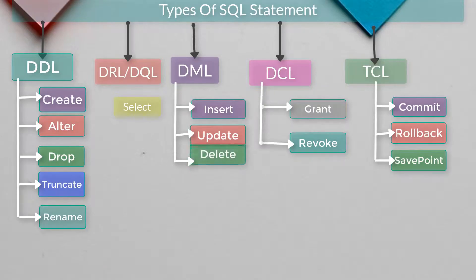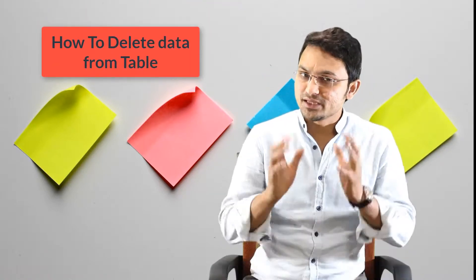In our last session we discussed the INSERT operation from the DML classification. Now we are going to take one more operation from the same classification, which is the DELETE operation. That is the topic we are going to discuss in this session — how to delete a record from a table.